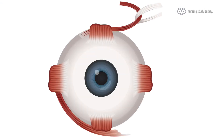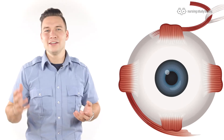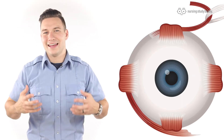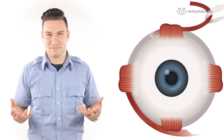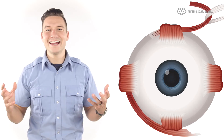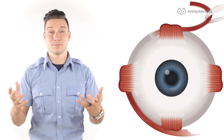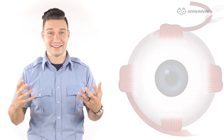Earlier we mentioned our shutter — this is going to be our iris. Besides merely looking pretty, our irises have a very unique and distinct function to them. This colored area dilates and constricts the pupils to let more light in based on a couple of reasons.